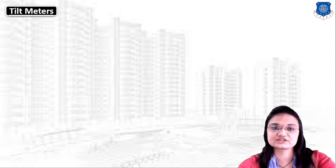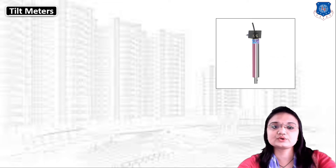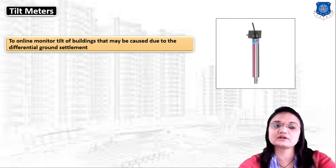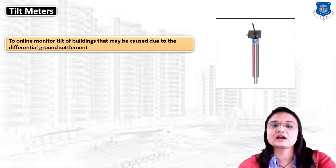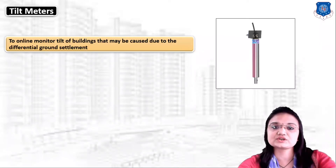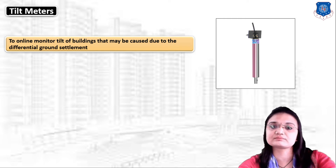Our first instrument is the tilt meter. As you can clearly see in this figure, this is a tilt meter. Tilt meter is generally used to monitor the tilt of any buildings, which may be caused due to differential ground settlement. Due to differential ground settlement, there will be a change in building structures, so to measure the tilt in building structures, we use the tilt meter.